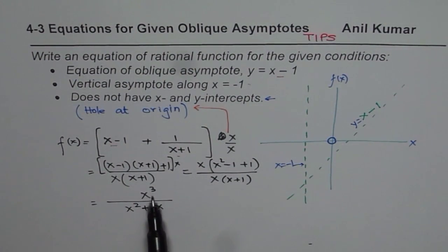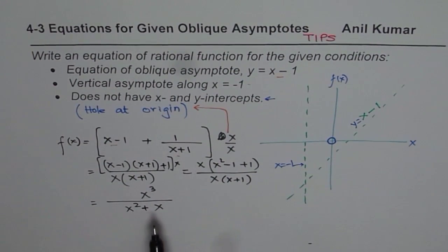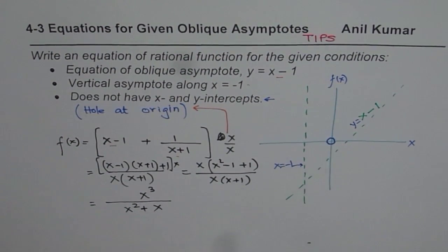Now clearly, since the degree of numerator is 1 higher, it has an oblique asymptote. Now, and since as we saw, there is a factor x over x which cancels out leading for the hole.